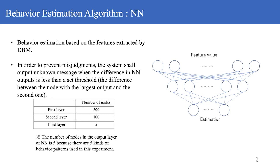Next comes the neural network. It performs behavior estimation based on the features extracted by the Deep Boltzmann machine. In order to prevent misjudgments, it outputs an unknown result if the difference between the largest and second largest value in the output layer of the neural network is less than a threshold value. The parameters of the neural network used in this system are shown in the table below.